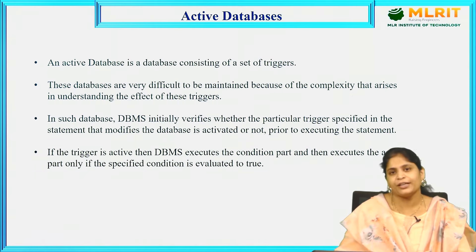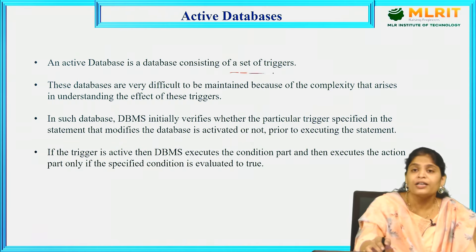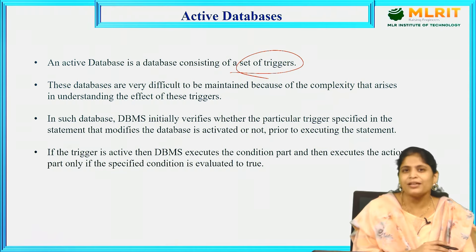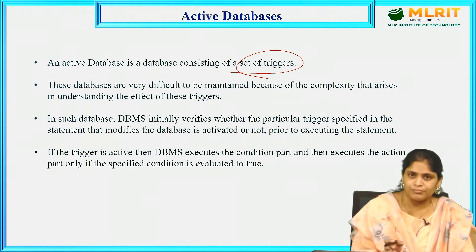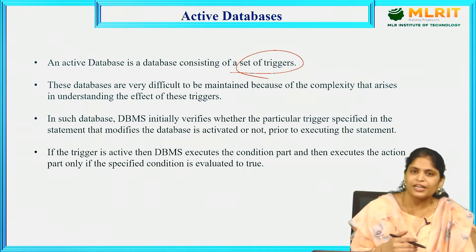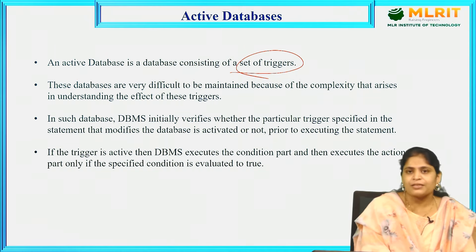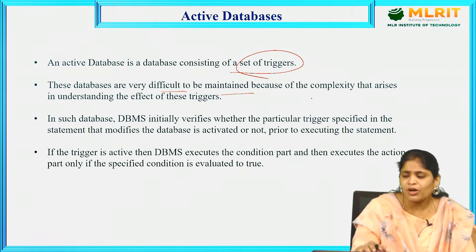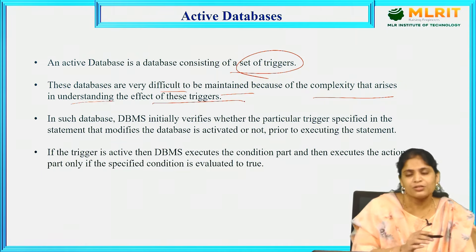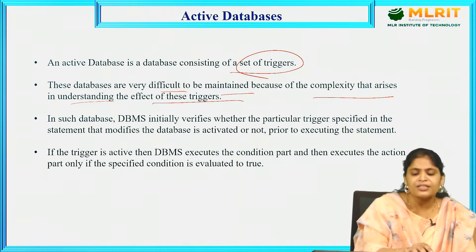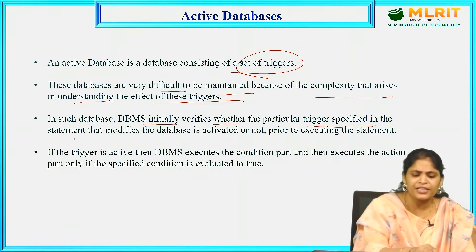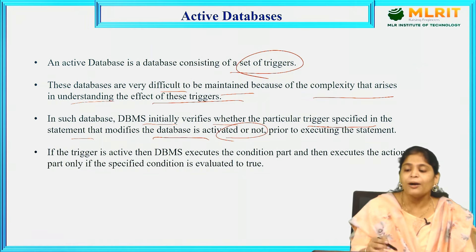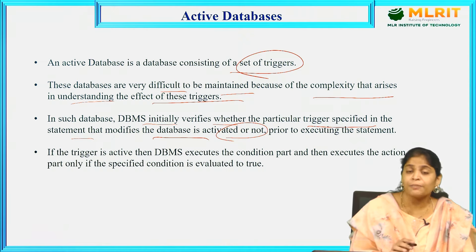Next, coming to active databases. An active database is a database consisting of a set of triggers. These databases are very difficult to maintain because of the complexity that arises in understanding the effect of these triggers. DBMS initially verifies whether a particular trigger specified in a statement that modifies the database is activated or not, prior to executing the statement, and verifies whether the trigger is working correctly.